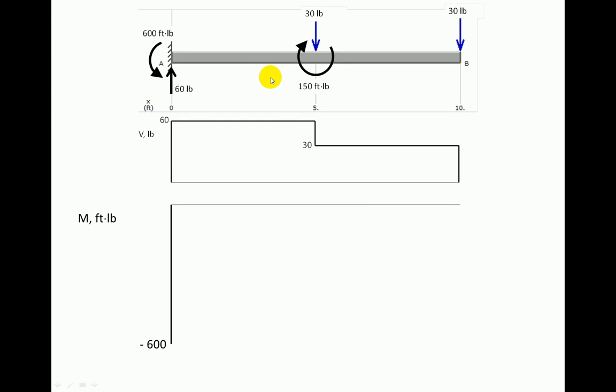Between A and the center of the beam, we look at this area under the shear diagram. In this case, it's 300 foot-pounds. We simply add that to our negative 600, so we'll end up here at minus 300. Because of the fact that this is a flat line, in other words, the slope is positive 60 the entire way, then we're going to have a straight line from our minus 600 up to minus 300.